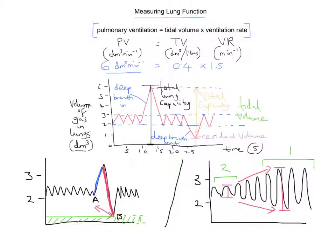A question you might get is: calculate the percentage increase in tidal volume from when the person is at rest to when they're breathing most deeply. You measure the resting tidal volume — call it A — and the maximum tidal volume — call it B. To get the percentage increase in tidal volume, work out the difference between A and B, divide that by B (the original), and multiply by 100 to get the percentage difference. That's just two examples of exam-style questions related to lung function.